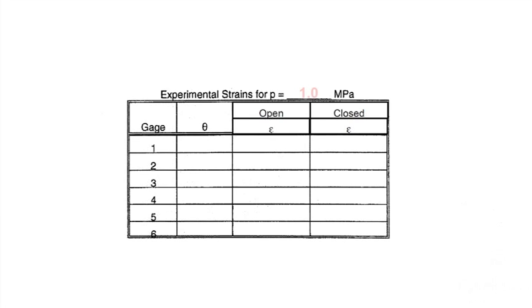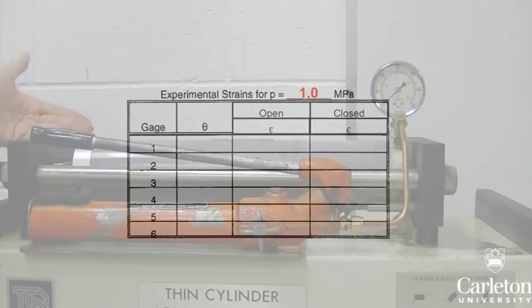For the next experiment, we will consider strains on all six gauges in both open and closed end conditions. First select an internal pressure to work with. We will be using 1.0 megapascals.